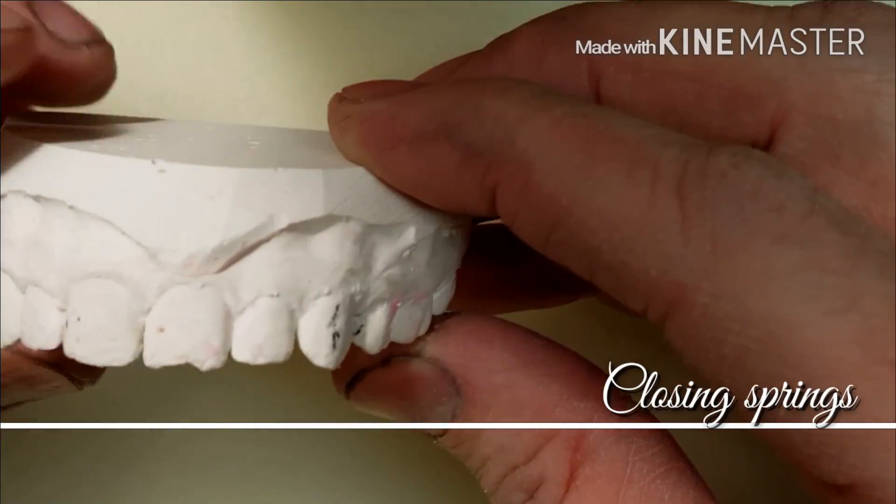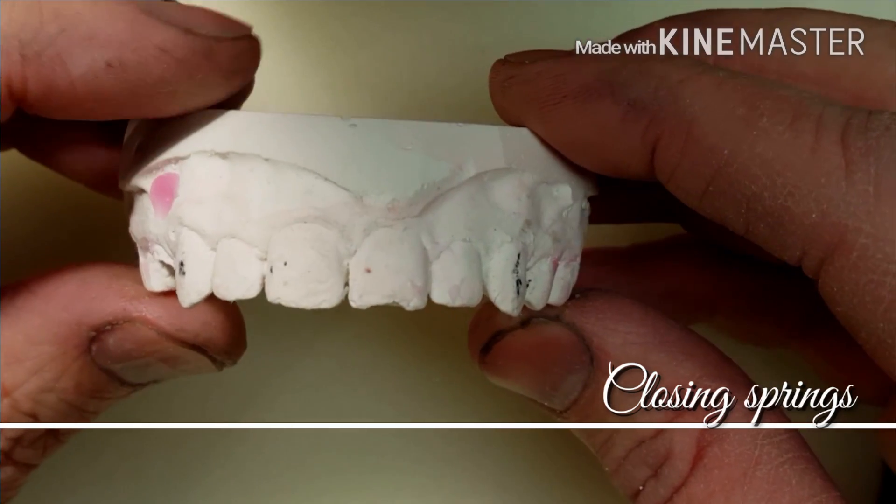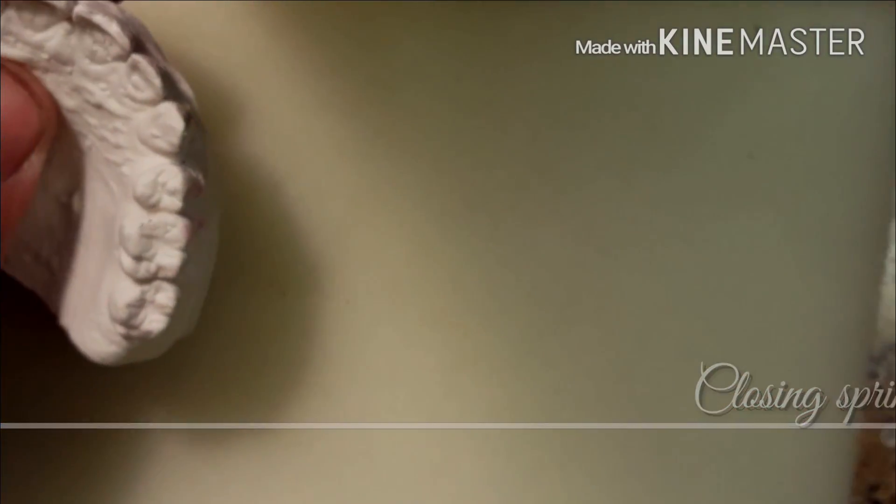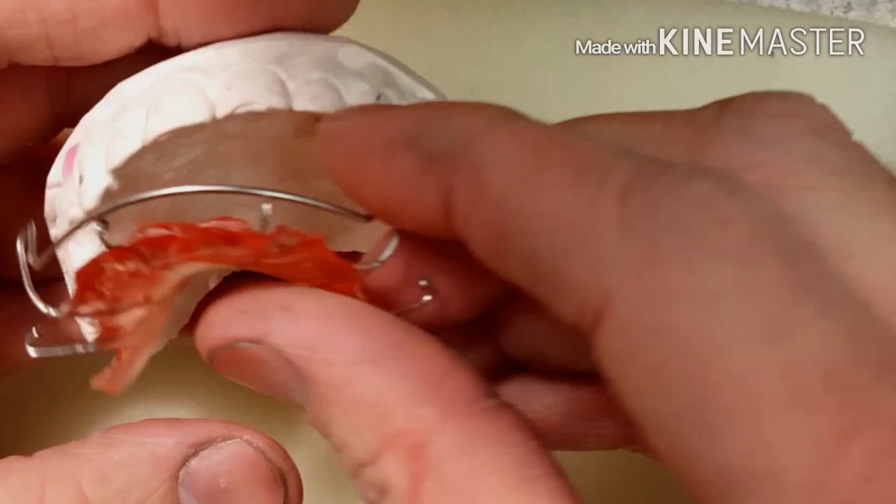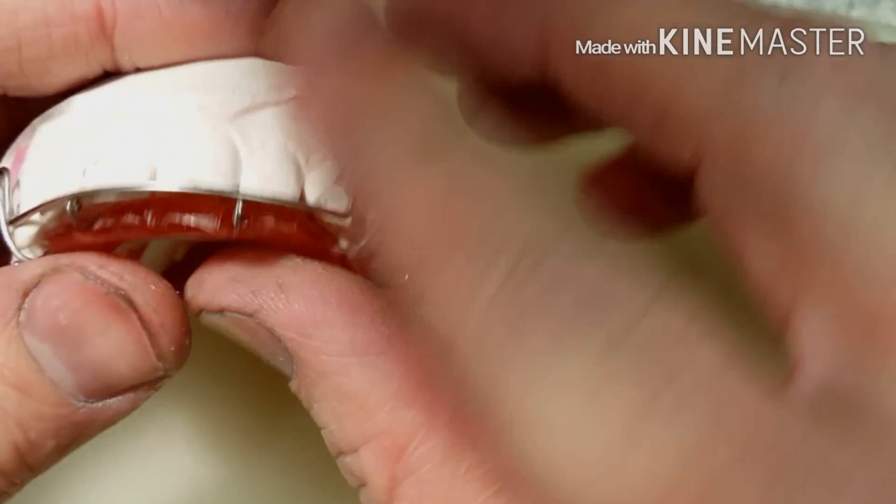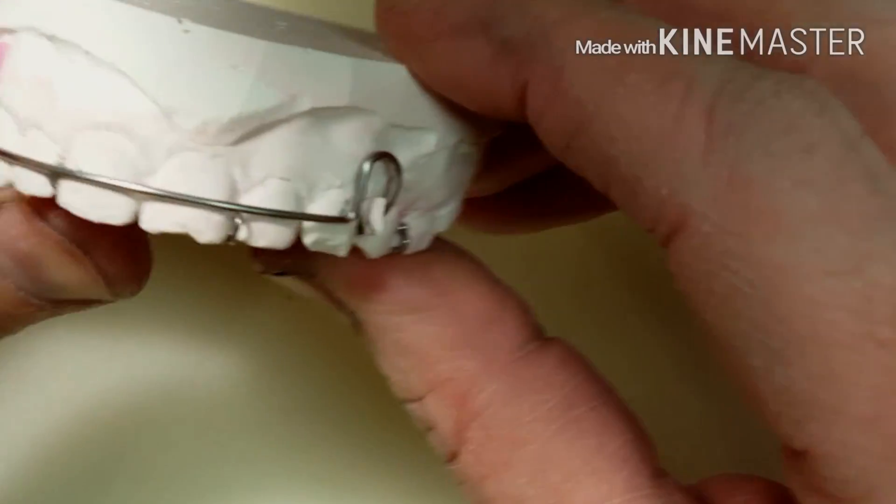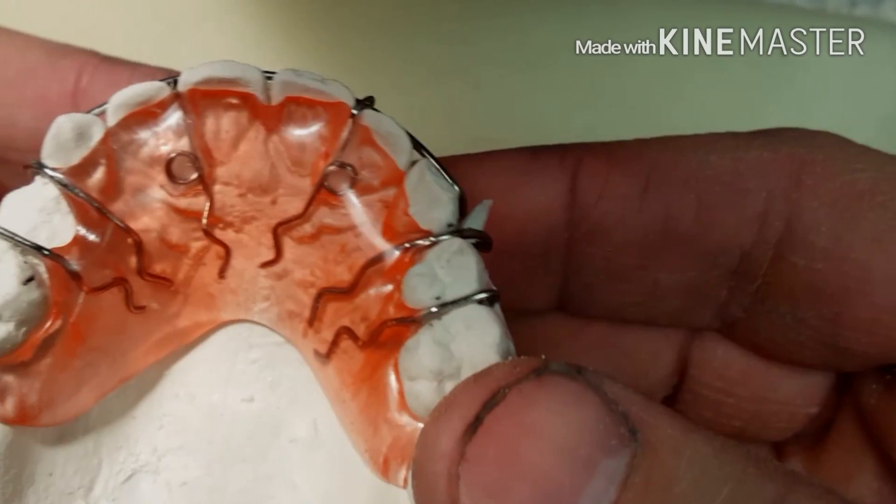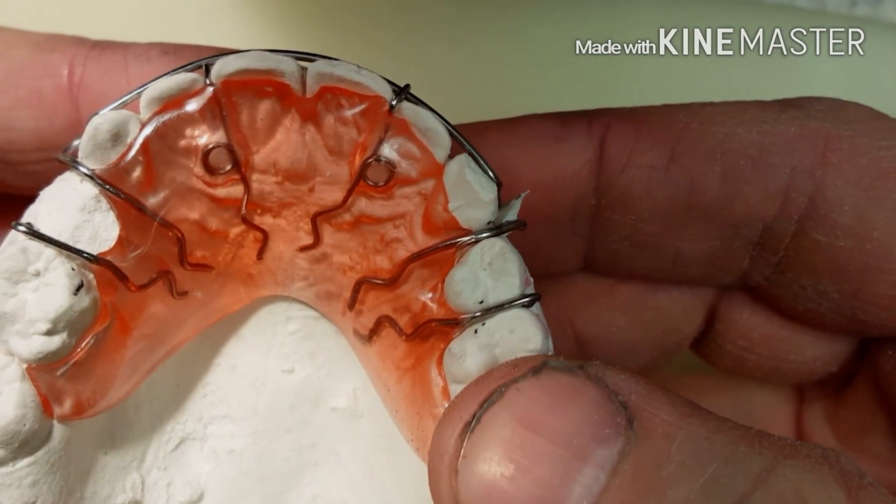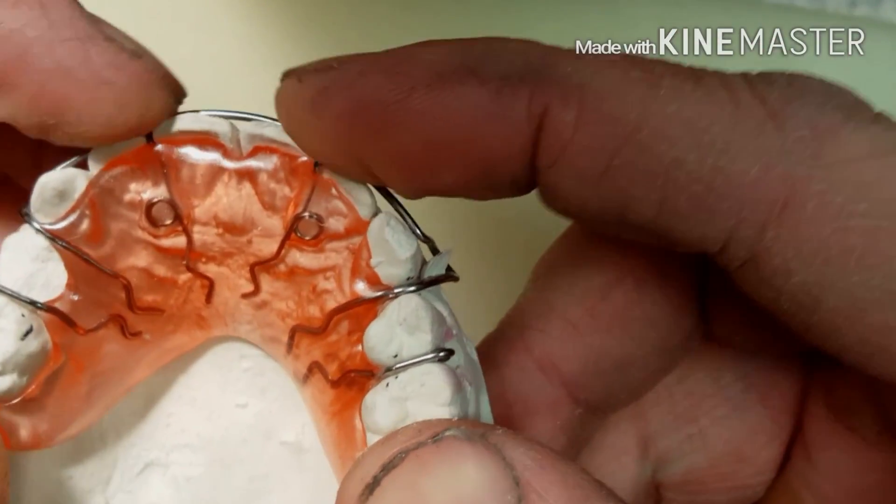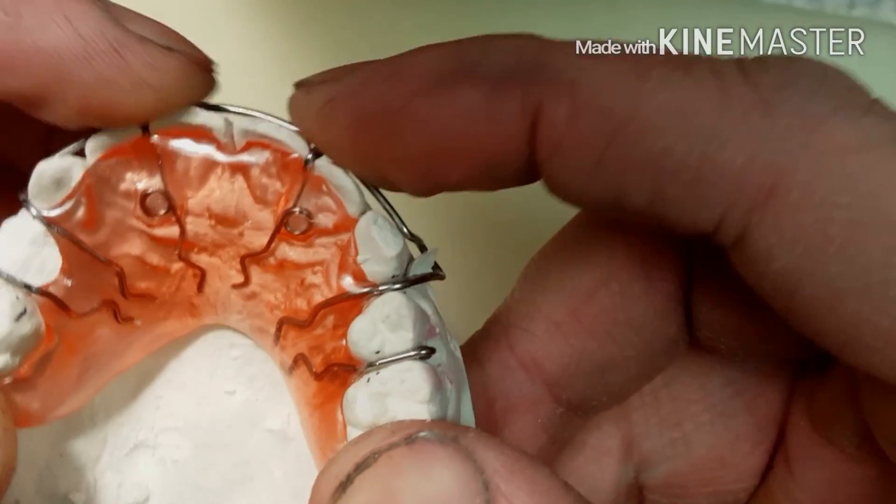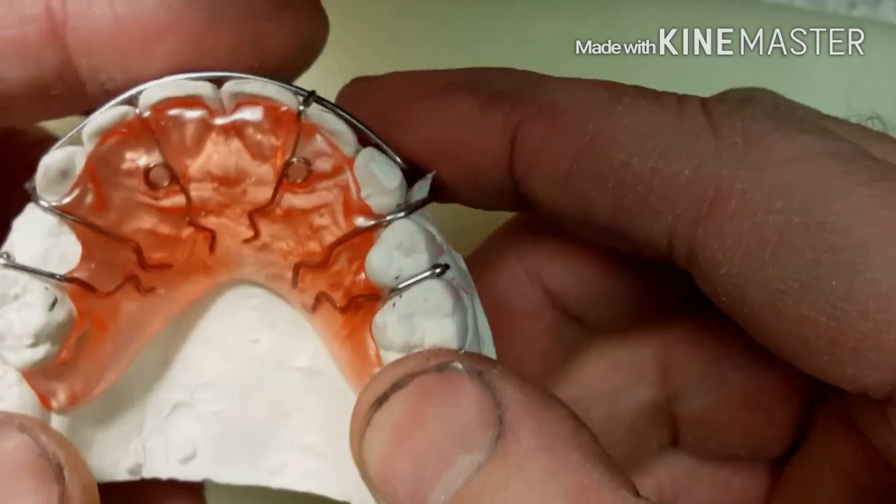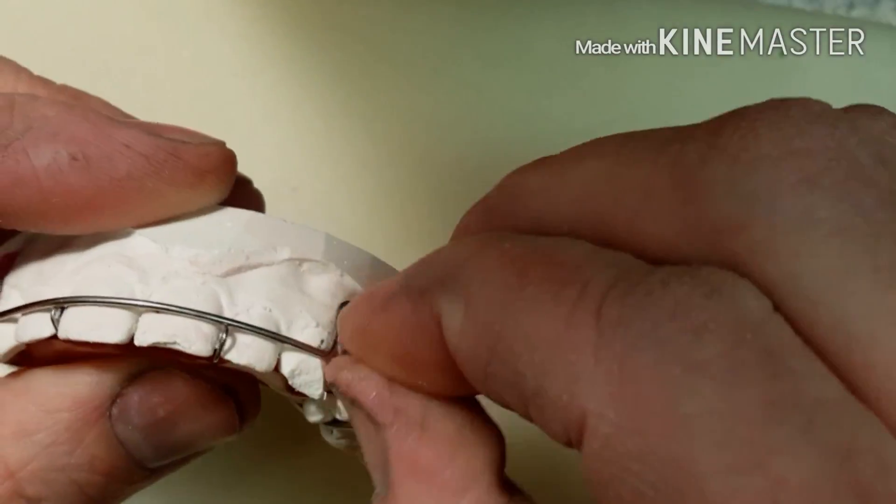Hi, this is a quick video on how to close a diastema using finger springs. In this video, I'm going to show you a quick demonstration. This is the finished product and what finger springs look like on a model, what they look like in the patient's mouth, and what they look like through the acrylic. Notice they're buried under the acrylic. Both springs easily move pressure towards the center of the midline to close up a diastema.